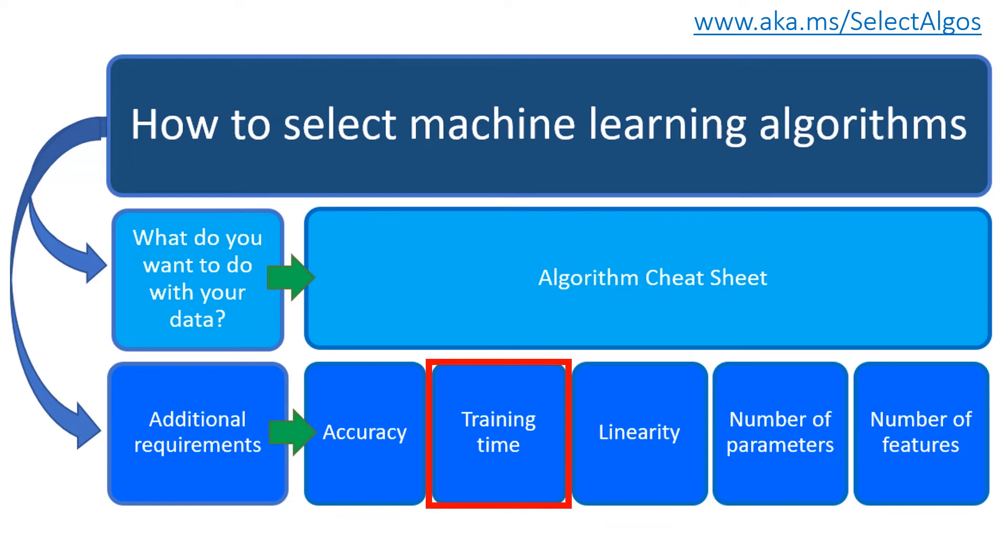Then we have the training time. In supervised learning, training means that you can use historical data to build a machine learning model that minimizes errors. The number of minutes or hours necessary to train a model can be different depending on the type of algorithms that you can use. And training time is often closely tied to accuracy.